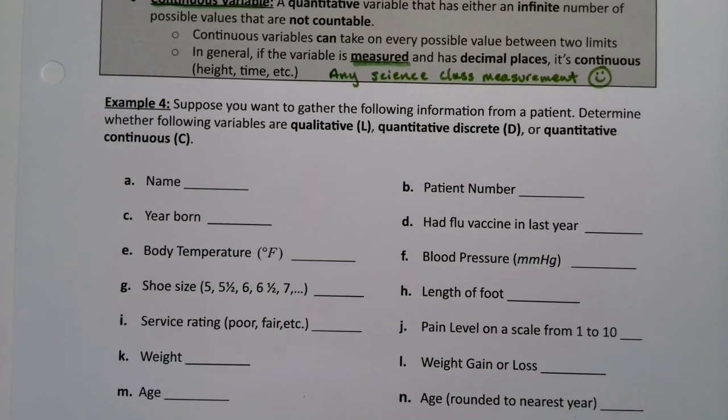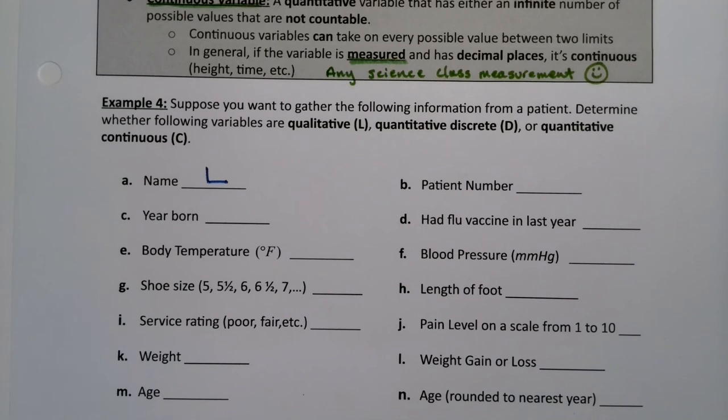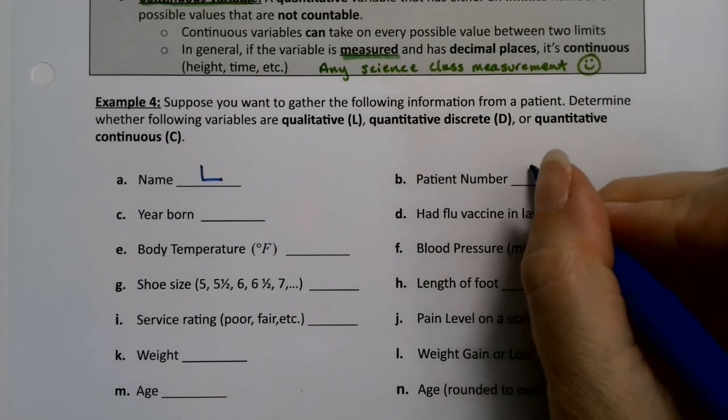Let's start with the name. Well, your name is qualitative. So I'm going to give it an L for qualitative. Because I can't do a meaningful calculation on your name. Your name is your name.